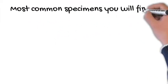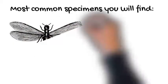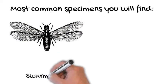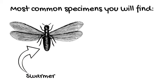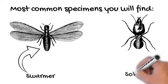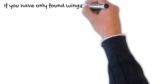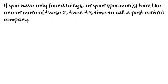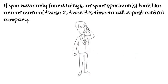Most common specimens you will find are going to be the swarmers and soldiers. It is possible to come across a worker termite, but that is very hard to ID. If you have only found wings, or your specimen looks like one or more of these two, then it's time to call a pest control company.